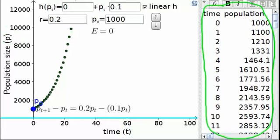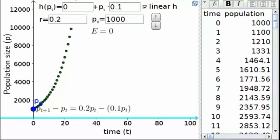The applet also displays a list of the population sizes at different time periods. Here we can see, for example, that the population size at time 4, or p sub 4, is 1,464.1.